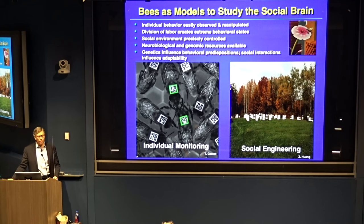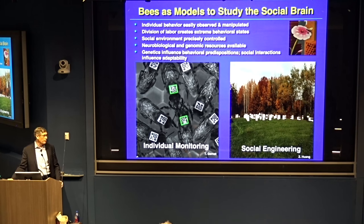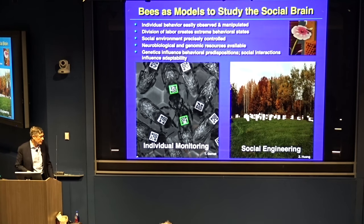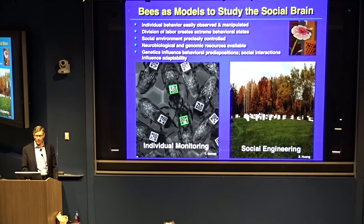Fourth, neurobiological and genomic resources are becoming more available. They're not as advanced as in model genetic systems, but they're coming on board. The laboratory of Daniel Kronauer is leading the way in the development of functional genomic resources at Rockefeller University to manipulate the kinds of hypotheses generated with descriptive discovery genomics. And finally, genetics influences behavioral predispositions, while social interactions influence the adaptability and flexibility one sees — a truism of any society.